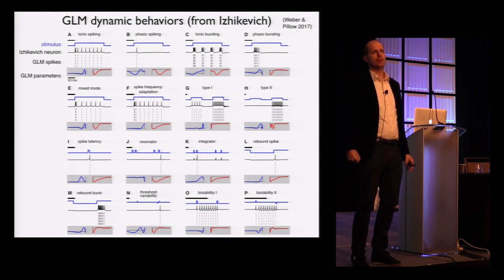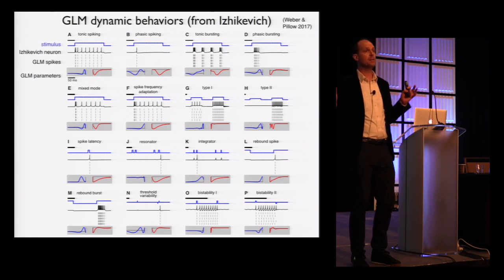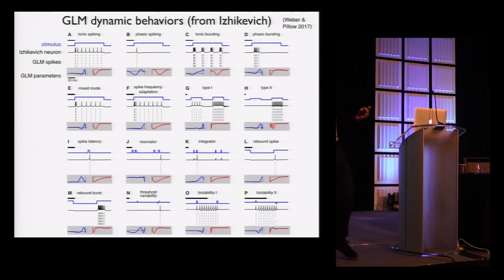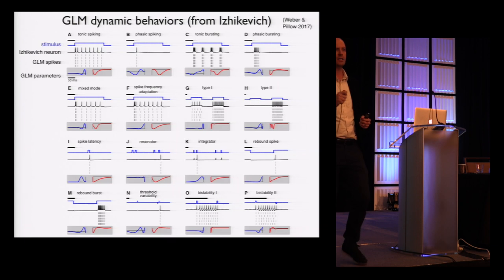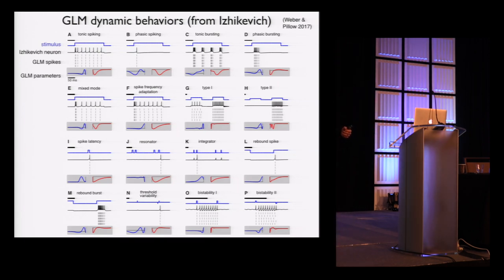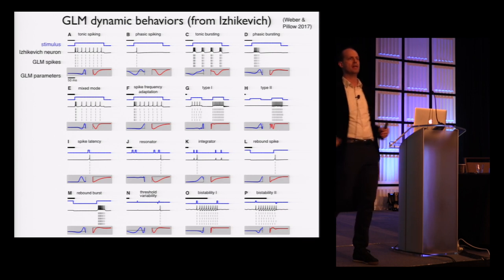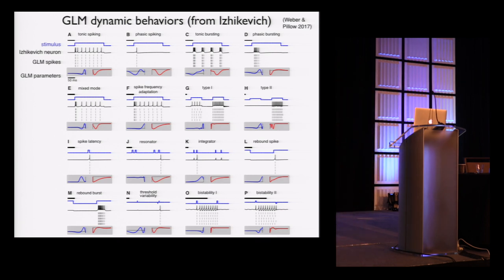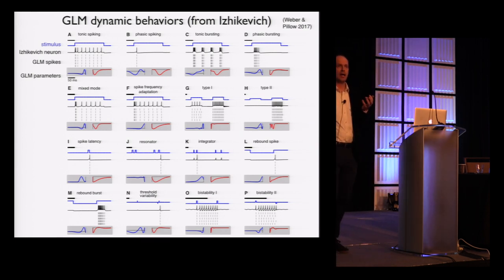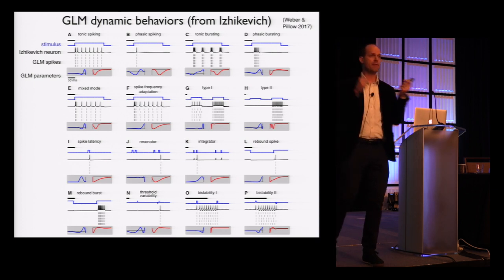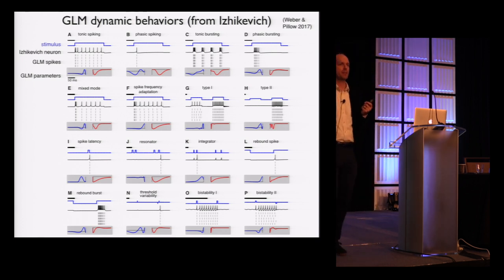MLE is not going to be great when you have strong correlations in your regressors. So if I have two regressors that are very similar — say hand position and acceleration and velocity are correlated with each other — whenever I'm at high velocity, I'm always also at high acceleration. What we're ultimately trying to do with the GLM is assess the degree to which variable A versus variable B is responsible for my spikes.